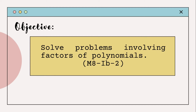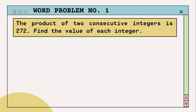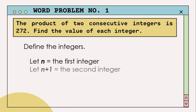Let us have our word problem number one: the product of two consecutive integers is 272. Find the value of each integer. The first thing that you need to do is to define the integers. Let n be the first integer and let n plus one be the second integer.